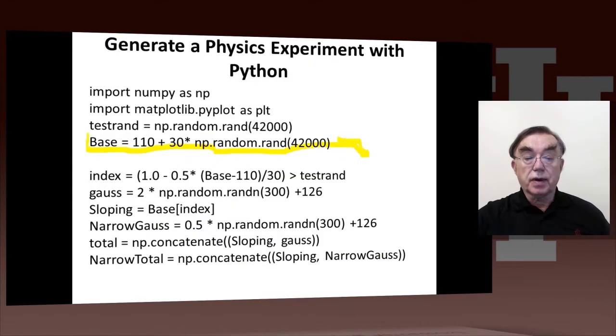So if we look at this software, we now have this first statement on base is actually generating not a sloping background, but a uniform background. And later on, we'll just study uniform backgrounds, just so we don't get into too many complicated things at this stage.